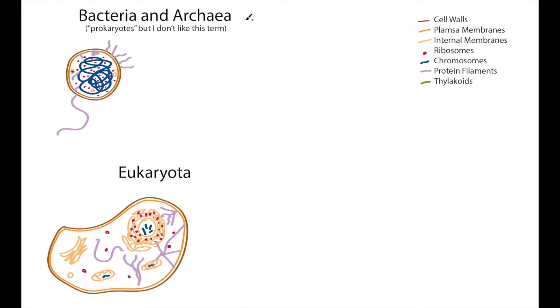One of them is combined bacteria and archaea. These are traditionally called prokaryotes. I'll tell you why I don't like that term in a minute. And then there's eukaryotic cells that tend to have a lot more complexity and structure.